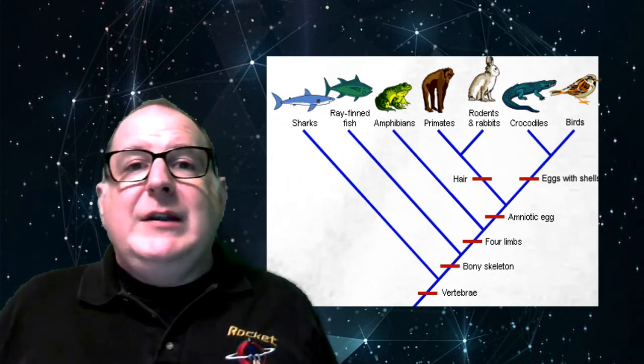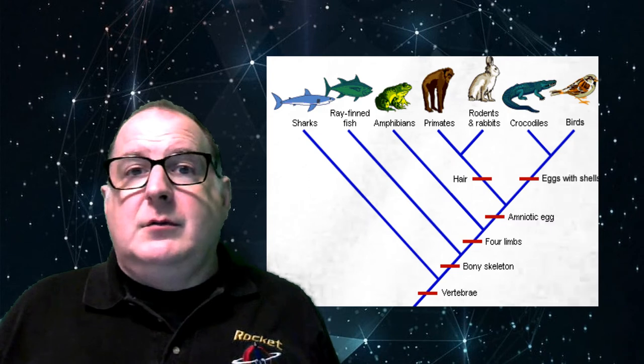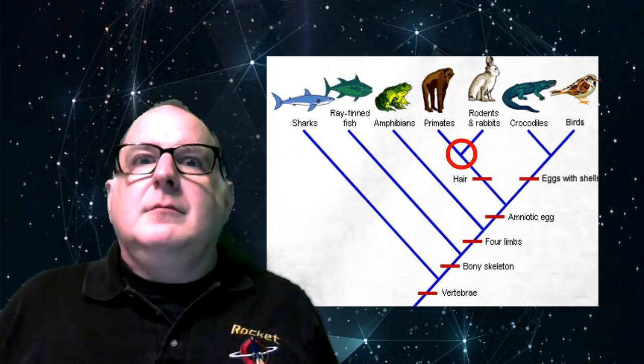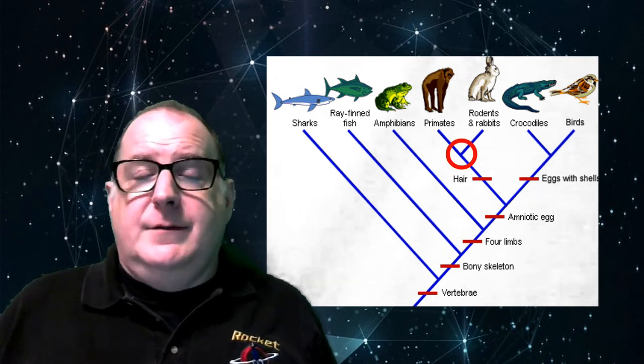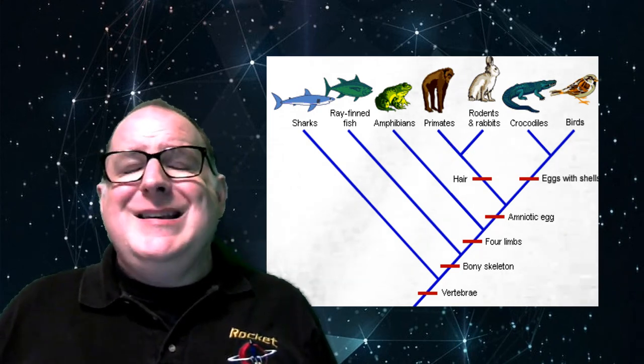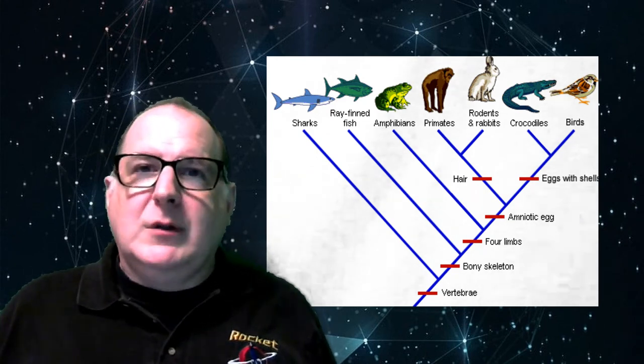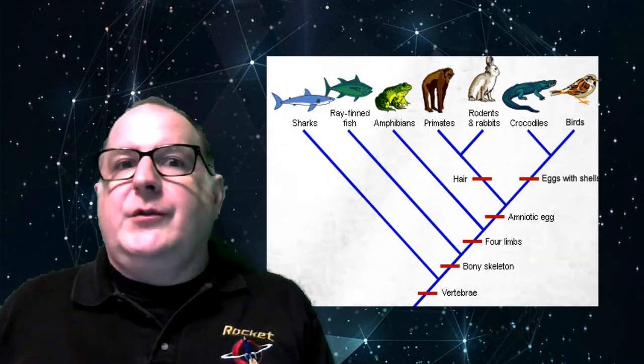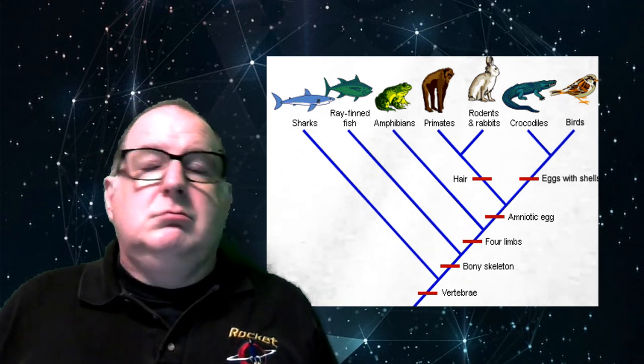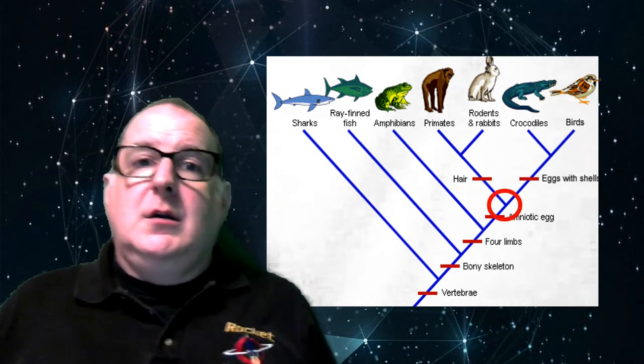The most recent common ancestor for primates - that's you and me - and rabbits is here after hair developed, which is much more recent. Because the hair is more recent, primates are more closely related to rodents and rabbits than they are to crocodiles. You have to go back further to get to the join with that branch.